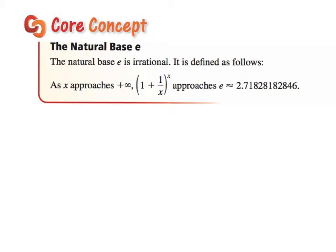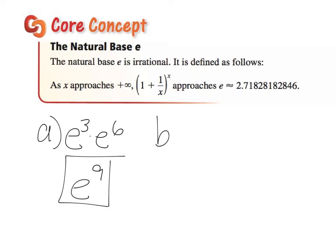So some really easy examples. If I asked you to simplify the expression e^3 multiplied by e^6, we follow the same rules of powers. We add the powers. This would give us e^9. For part B, 16e^5 divided by 4e^4 would simplify into 4e, because 5 minus 4 is 1.